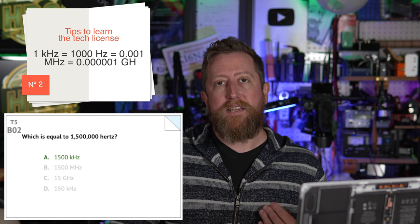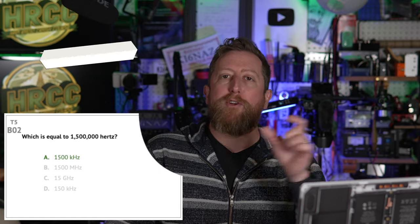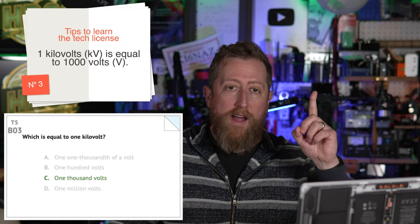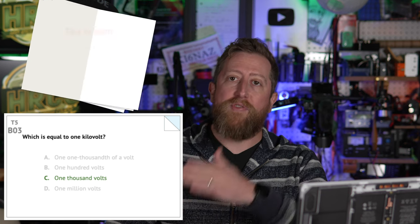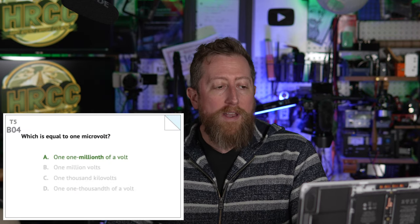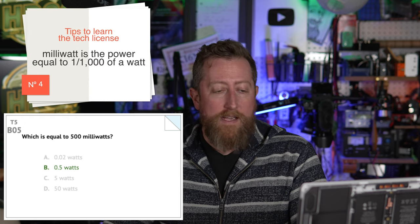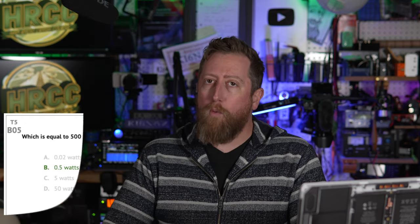Bravo 02: which is equal to 1 million hertz? The answer is A, 1 megahertz — moving the zeros around. Bravo 03: which is equal to 1 kilovolt? C, 1000 volts. Bravo 04: which is equal to 500 milliwatts? The answer is B, 0.5 watts. Bravo 06: which is equal to 3000 milliamperes? The answer is D, 3 amperes. So we're playing around with zeros and the different variations, which is all important.